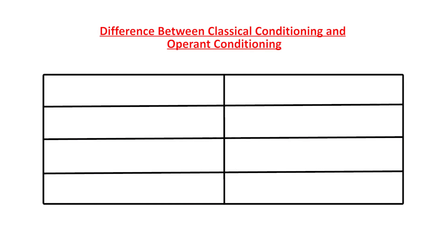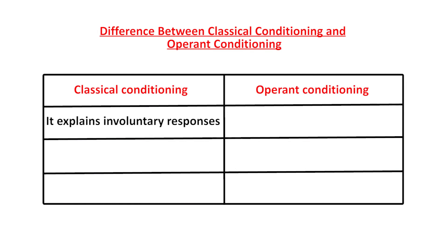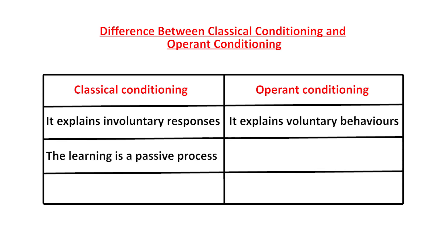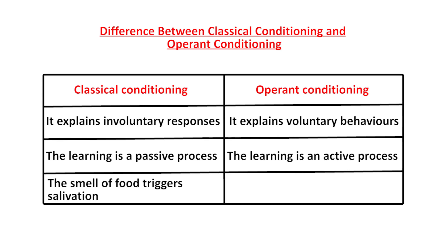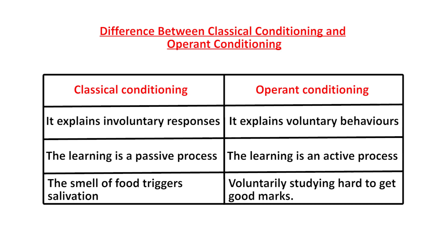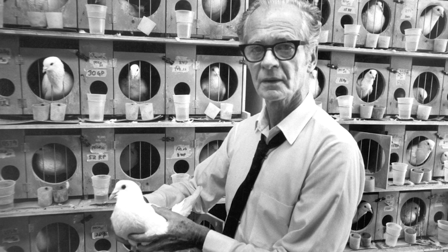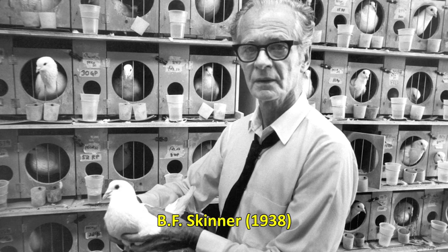The table projected to you now gives a clear distinction between classical and operant conditioning. Classical conditioning explains involuntary responses whereas operant conditioning explains voluntary behaviors. Classical conditioning is a passive way of learning whereas operant is an active way of learning. For example, the smell of food triggering salivation is classical conditioning, whereas voluntarily studying hard to get good marks is operant conditioning.